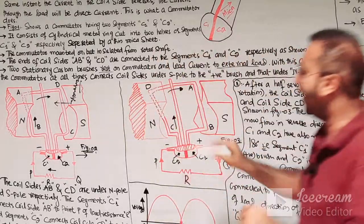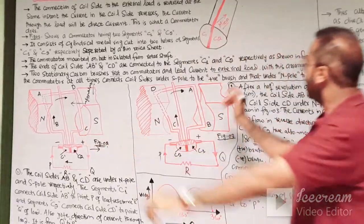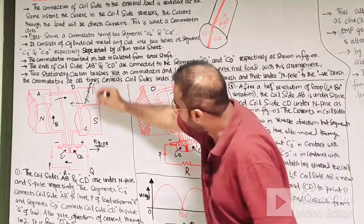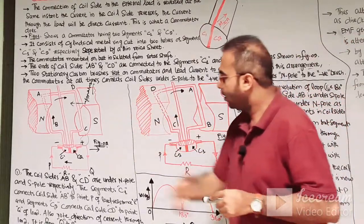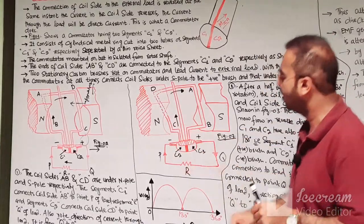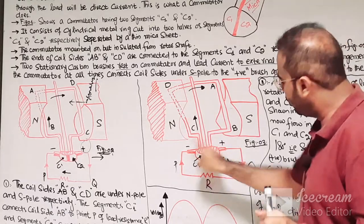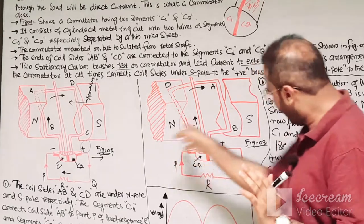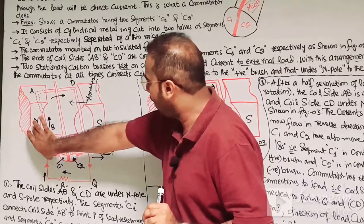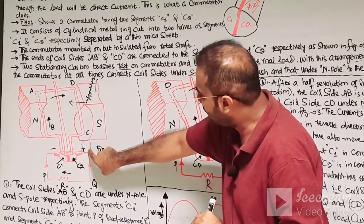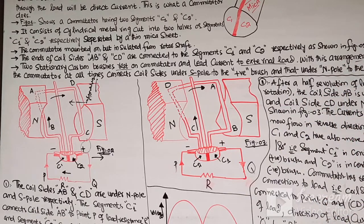With this arrangement, the commutator at all times connects the coil sides under the S pole with the positive brush and the coil sides under the N pole with the negative brush. As you can see in both diagrams, the bush position is not changed — the negative bush is always connected with the N pole in both figure 2 and figure 3, and the positive bush is always connected with the S pole at all times, even as the coil sides are being changed.